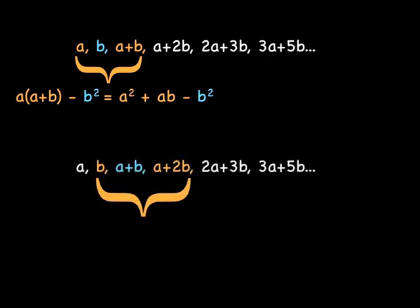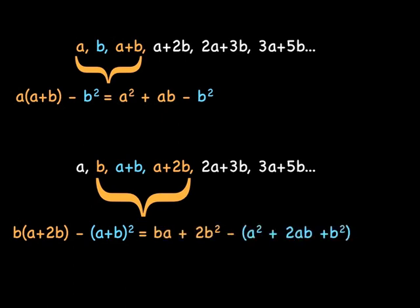So, we're going to do the same thing there. That is the rectangle, b times a plus 2b, minus the square, a plus b squared. We're going to expand it and simplify. And simplify again.